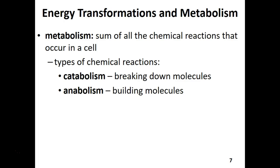Metabolism is the sum of all chemical reactions that occur in your cells, and they can be broken down into two types. Catabolic reactions break down large molecules into smaller subunits. Anabolic reactions are building-up reactions where you take small subunits and build up a larger molecule. A memory trick: cats knock things off counters and break them — catabolic reactions break things. And anabolic steroids help build up muscle — anabolism is a building-up process.